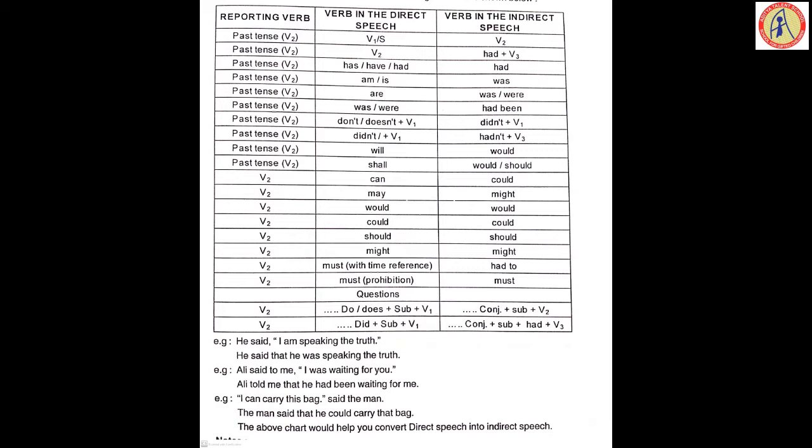When the reporting verb is 'said' or 'said to' and the speech in direct speech is given in past tense V2, it changes into past perfect — that is, had plus V3. Also, 'has' or 'have' (present perfect) changes into past perfect: had plus V3.